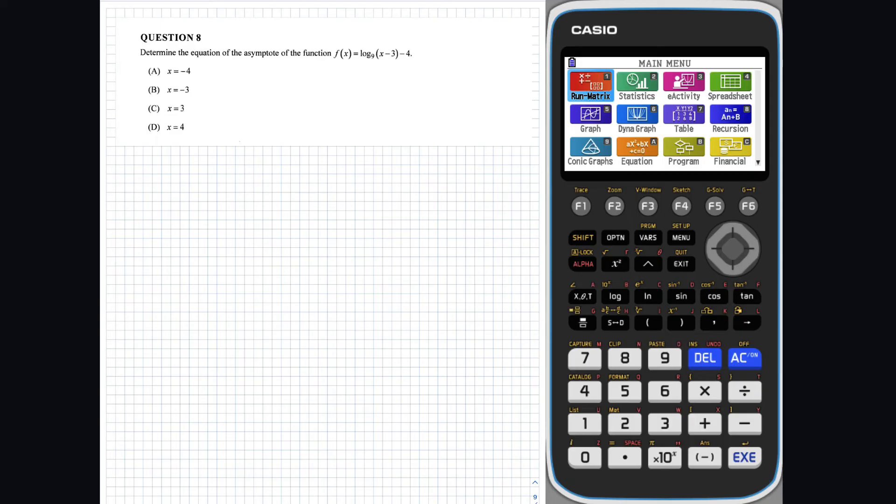Question 8. To determine the equation of the asymptote of the function log base 9 of x take 3, subtract 4, we need to determine which value of x makes f of x undefined. Or, as I like to say, what makes f of x mad? We know that an input of 0 makes log x mad. So, in this case, since we are dealing with log base 9 of x take 3, if x equals 3, then f of 3 is undefined.